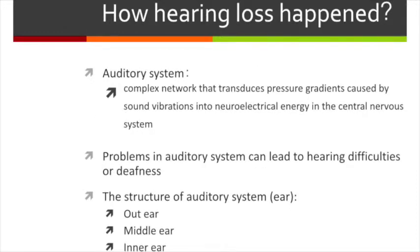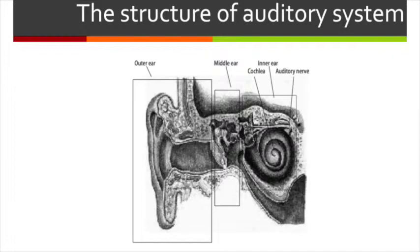So, how does hearing loss happen? Our auditory system is a complex network that transduces pressure gradients caused by sound vibration into neuro-electrical energy in the central nervous system. Any problem in the auditory system can lead to hearing difficulty or deafness. Let's take a look at the structure of the auditory system.